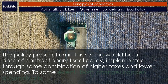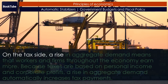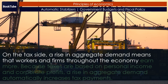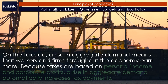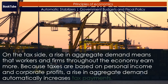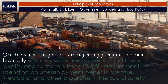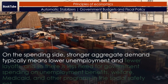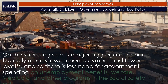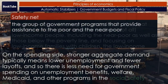To some extent, both changes happen automatically. On the tax side, a rise in aggregate demand means that workers and firms throughout the economy earn more. Because taxes are based on personal income and corporate profits, a rise in aggregate demand automatically increases tax payments. On the spending side, stronger aggregate demand typically means lower unemployment and fewer layoffs, so there is less need for government spending on unemployment benefits, welfare, Medicaid, and other programs in the social safety net.